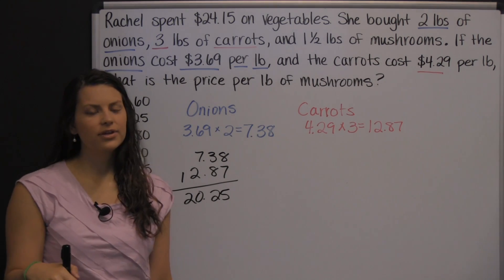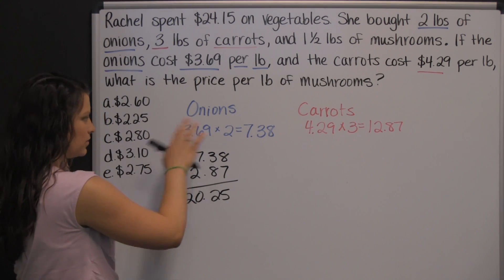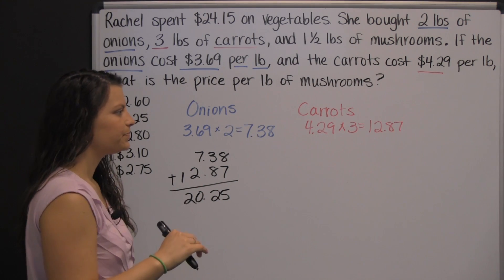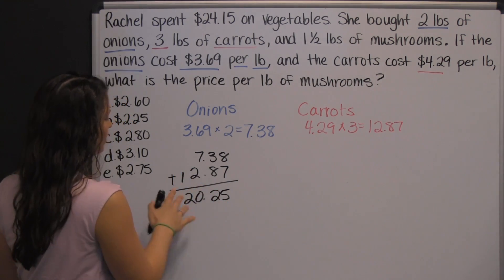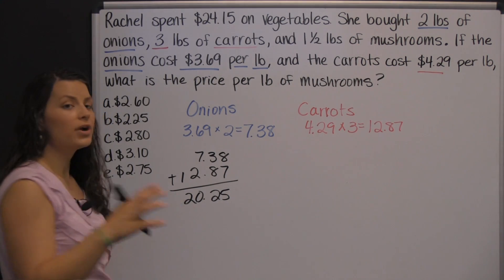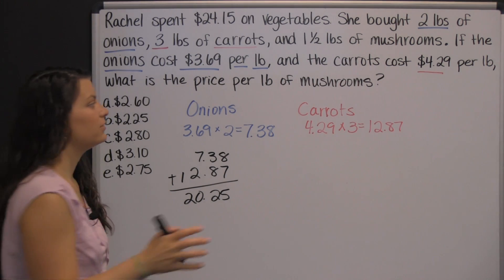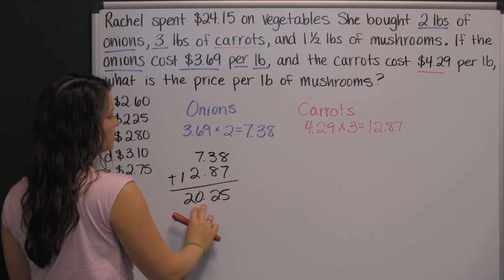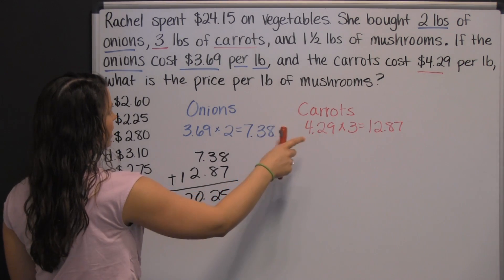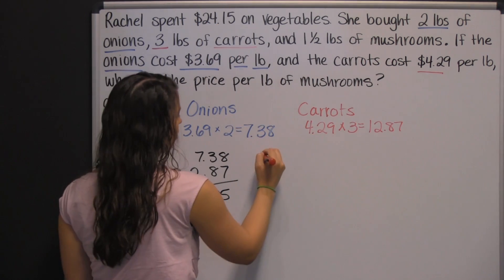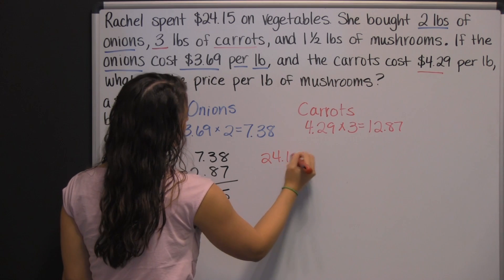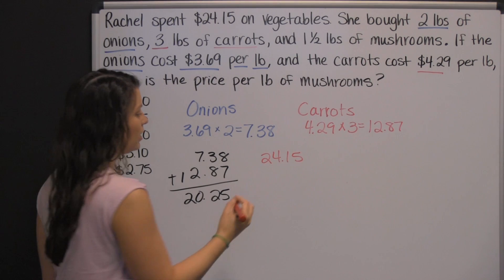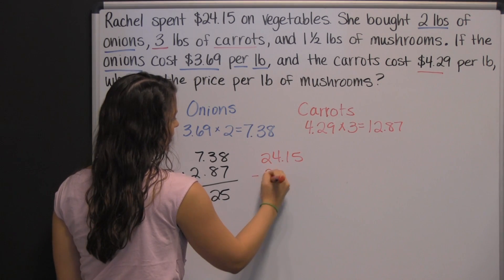Remember, you get to use a calculator on all of this, so don't worry about the actual multiplication or addition — just type it in your calculator. That's how much she spent on the onions and carrots. Since we're trying to find the price per pound of just the mushrooms, we need to take out what she spent on the onions and carrots from her total — the twenty-four dollars and fifteen cents, which covers onions, carrots, and mushrooms — and take out the onions and carrots.